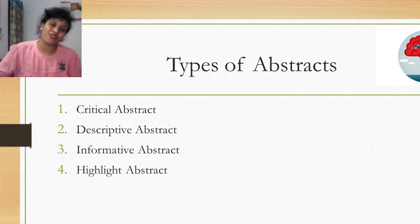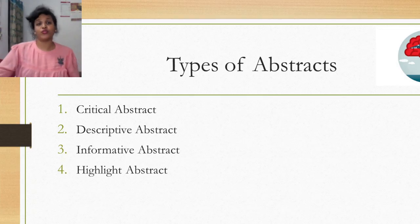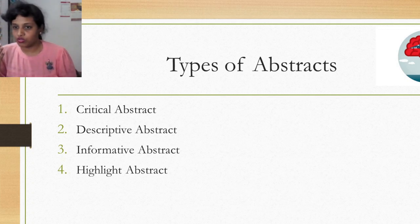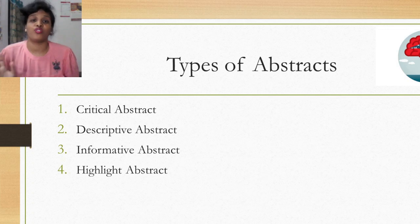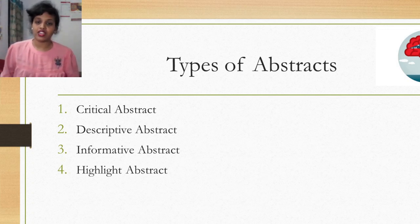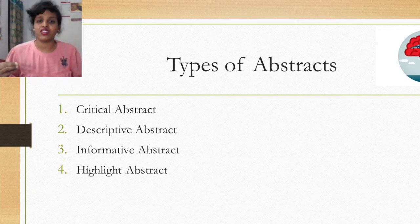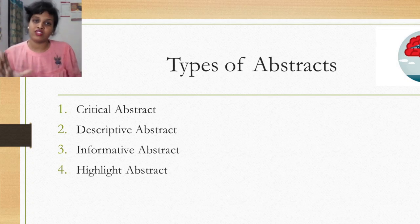There are four types of abstracts: critical, descriptive, informative, and highlight. Before going into types, understand the purpose: an abstract allows you to elaborate on each major aspect of your data and helps readers decide whether they want to read the rest. Everything from A to Z should be clearly summarized in a few lines so the audience can decide for themselves.